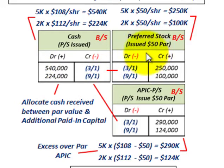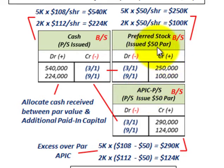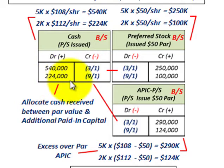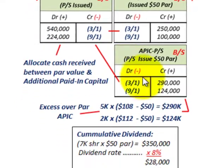Same as common stock — all we have to do is set up a separate equity account for the preferred stock. Any additional amount received above the par value goes to additional paid-in capital, and we record our cash receipts based on the issue price — what we received when we issued that stock.